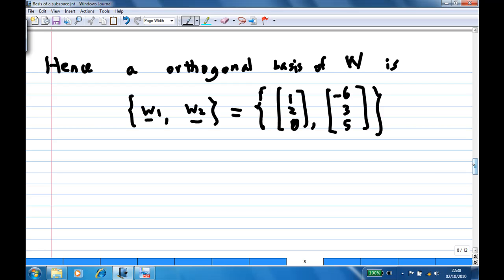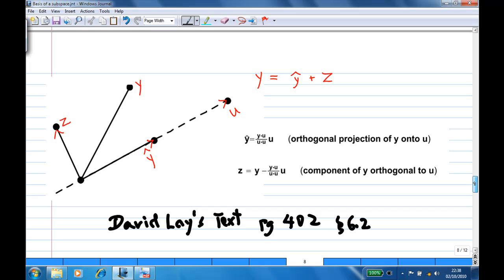Now, why is this true? This is actually based on David Lay's text, page 402, section 6.2. It says that any vector y can be written as a sum of two vectors y-hat and z, where y-hat is parallel to vector u, and z is perpendicular to vector u.